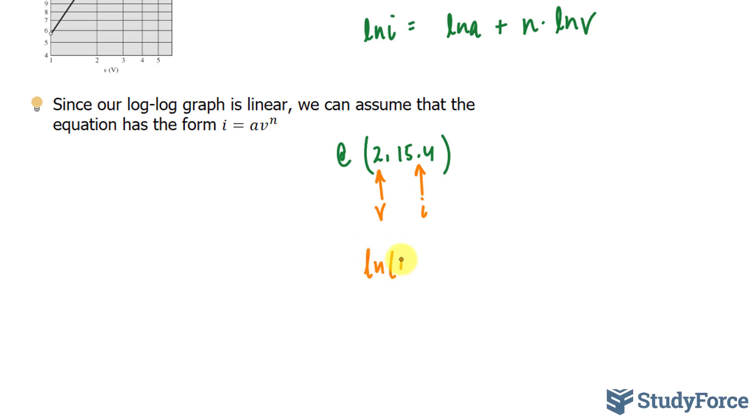This is my voltage, and this number is my i. So, I have ln of 15.4 is equal to ln a, which we don't know, plus n times ln at 2. And our goal by doing this is to solve for a and n. And we can do that by substituting another point, which we chose 5 and 58.1, then simultaneously solving for a and n.